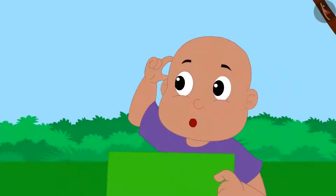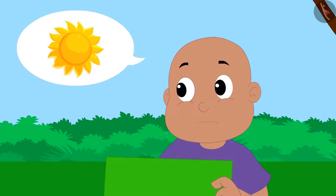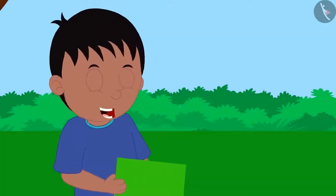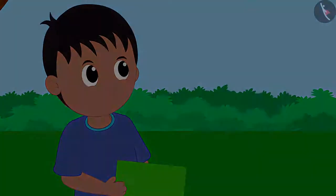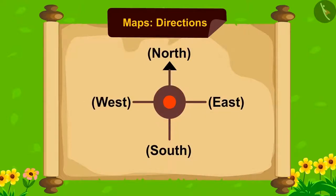But Raju, there is no sun shown on this map. Then how did you recognize the directions? Look, this is called a compass. Using this, we can determine the directions on any map.